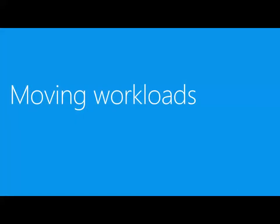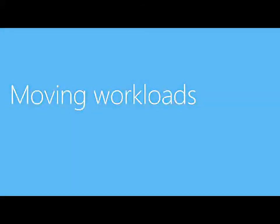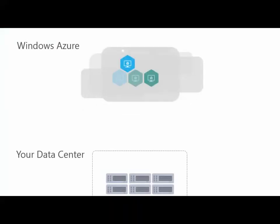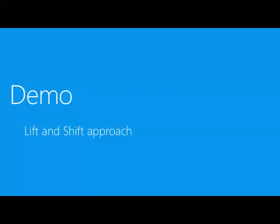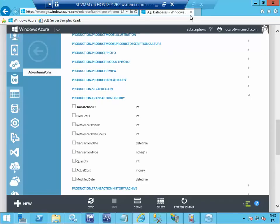Finally, let's look at how you move workloads. We've seen hybrid cloud through network connectivity, messaging, and SQL data synchronization. The last step is moving workloads — taking a virtual machine from your data center and moving it to Windows Azure, or vice versa. This is what I call the lift and shift approach. Let's have a look at that from the demo environment.